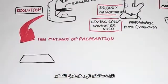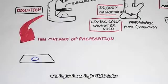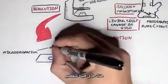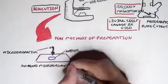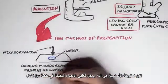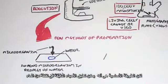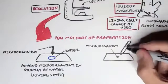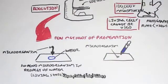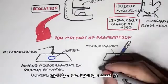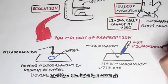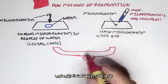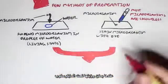Now let's look at some methods of preparation, concentrating on the compound light microscope. The main preparation method is to suspend the microorganisms in a droplet of water, so we can view them in a living state — for example, their movement. We can also use a dye, because usually microorganisms are colorless. After we dye it or place it in water, we can then observe the microorganism using a microscope.